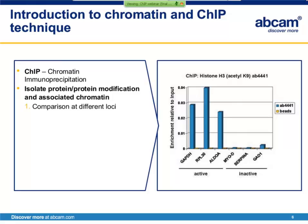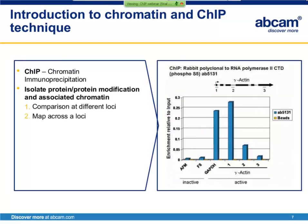Antibodies are used to pull out the proteins or protein modification of interest and identify their localization in the genome. ChIP can allow you to compare the enrichment of a protein or protein modification at different loci. In this example, histone H3 lysine acetylation is being analyzed across active and inactive loci. The bar chart shows that this mark is enriched at the active genes analyzed. ChIP can also allow you to map a protein or protein modification across specific loci of interest. In this example, active RNA polymerase is being mapped across the gamma actin gene with an antibody against phosphoserine 5 on RNA polymerase 2. The target localizes to the 5' end of the gamma actin gene, which is characteristic of this target.